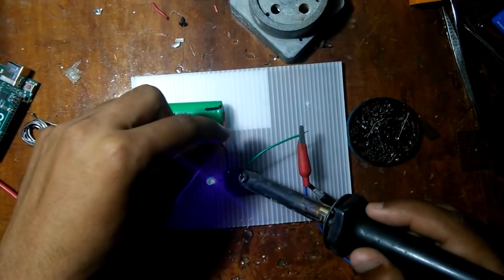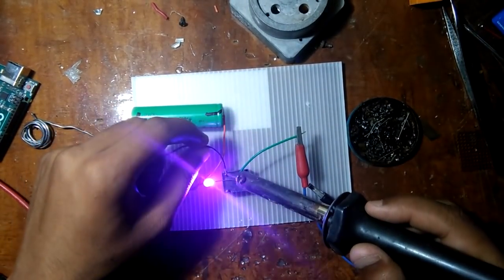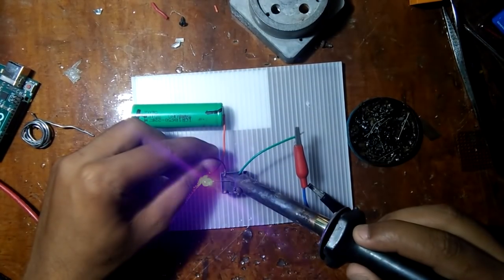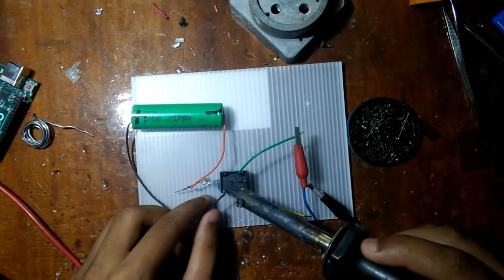Now let's change the configuration of wire to normally open. Now our LED will glow when I apply current to the relay terminal, and it's glowing.